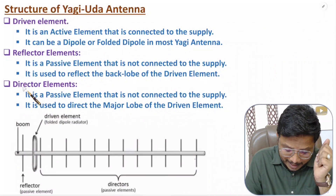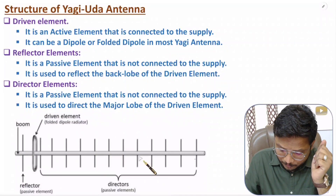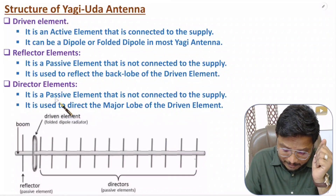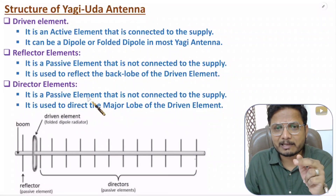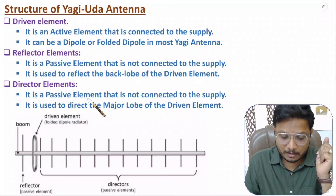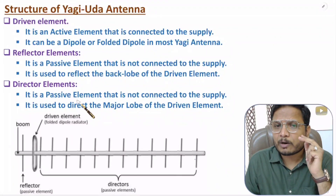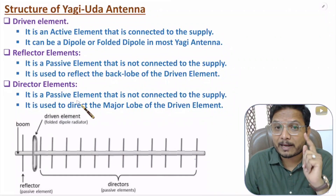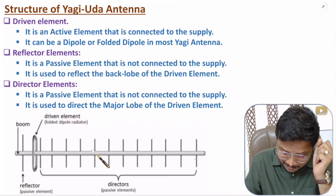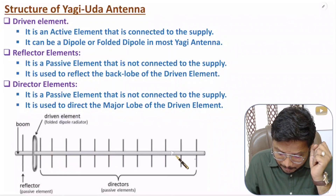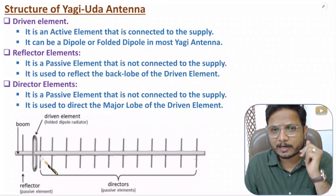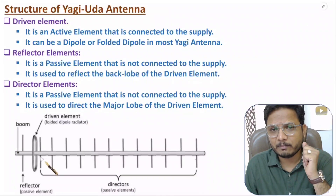Here we have director elements, which are also passive elements — we don't connect any power supply to them. Passive elements can also be referred to as parasitic elements. This director element directs the major lobe of the driven element, which I will show you in the radiation mechanism.